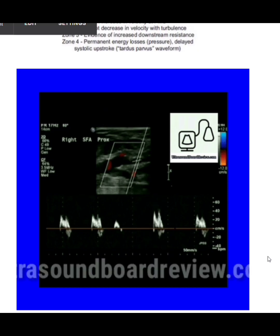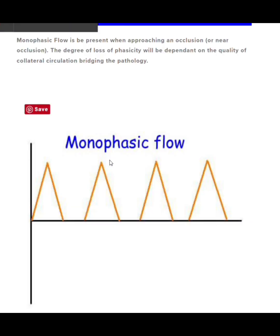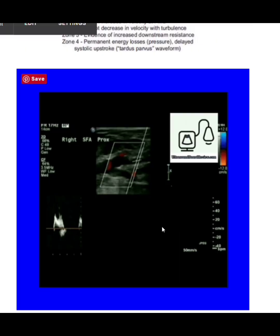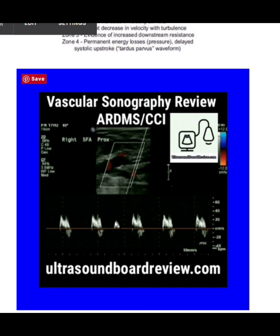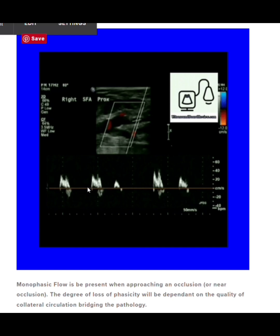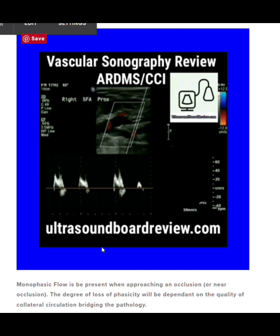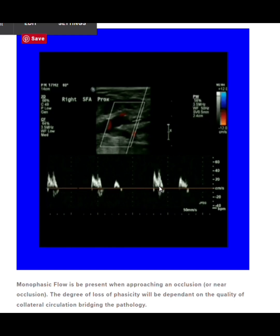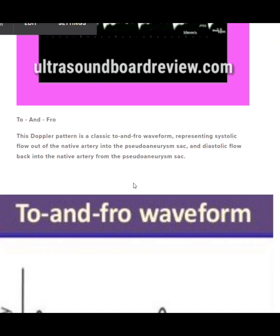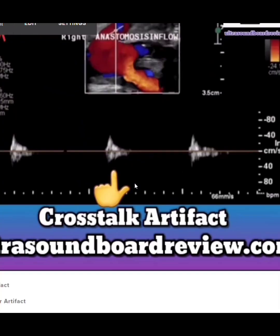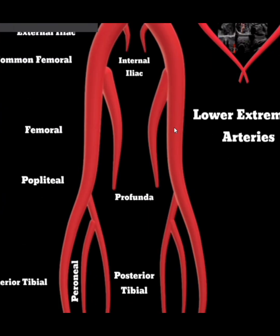This waveform is characterized as low velocity, high resistance flow, with a slow upstroke and slow downslope. We know it's low velocity by comparing to the scale, and high resistance because there's no flow in diastole. This is also referred to as monophasic flow and is problematic — if you see this waveform in an artery, it means the disease or occlusion is downstream from where you're scanning, and you are upstream from the disease.